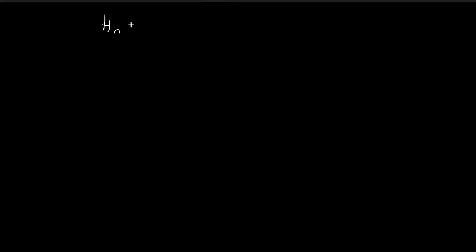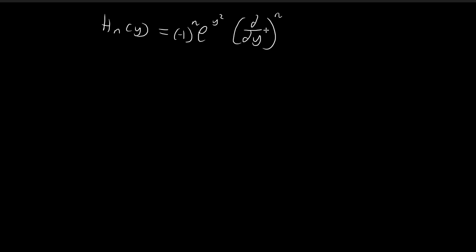The formula tells us that the nth Hermite polynomial is equal to negative 1 to the power of n, times e to the power of y squared. Then we have an operator representing the nth derivative, and we apply this operator to e to the power of negative y squared.